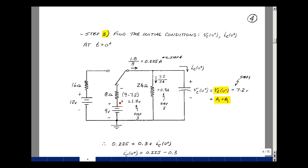If this is 9 volts here, and this node over here is the capacitor voltage, which is 7.2, then the voltage across this 8 ohm is 9 minus 7.2, and that's equal to 1.8.